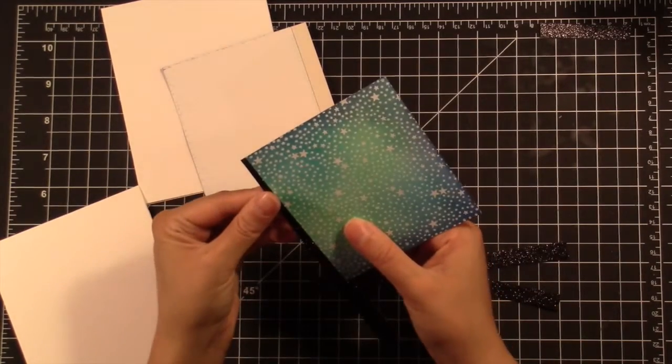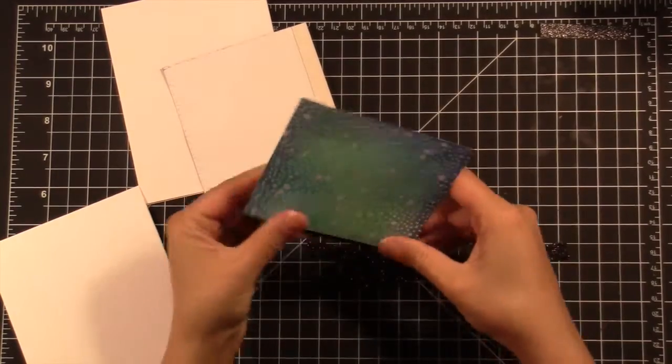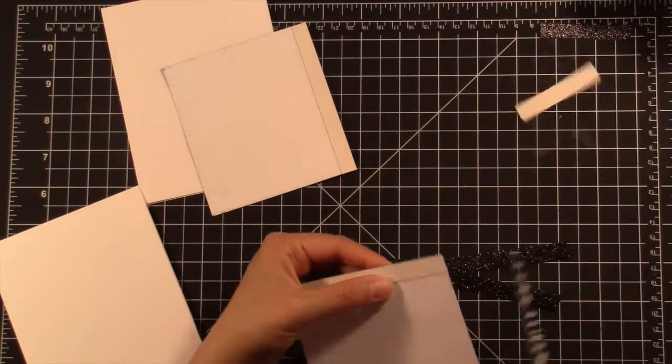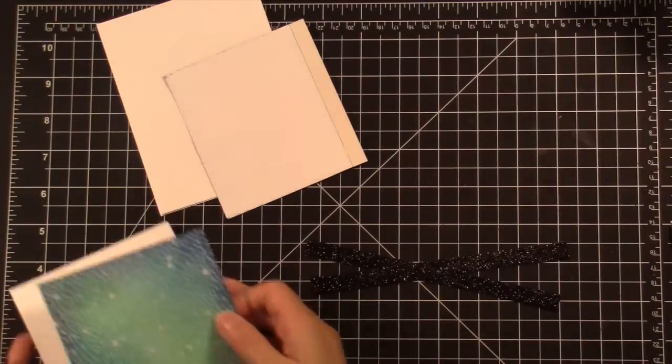And so I'm just attaching them with some snail adhesive and then trimming off the edge with my paper trimmer. And just lining them up, making sure that it's exactly how I like it before I commit to it and start stamping my sentiment and attaching these panels onto the card.